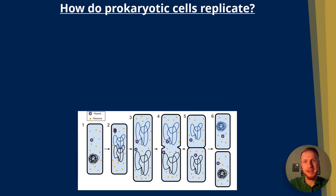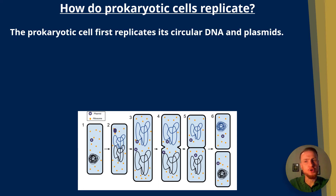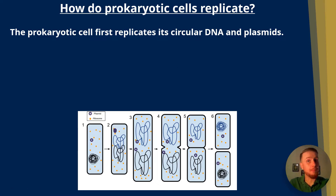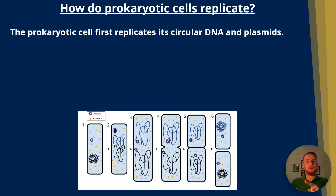I'm going to take you through that now. The first step is that the prokaryotic cell replicates its circular DNA and plasmids. Remember, plasmids are circular loops of DNA that give the bacteria things like antibiotic resistance, and they can actually be transferred from one bacterium to another.